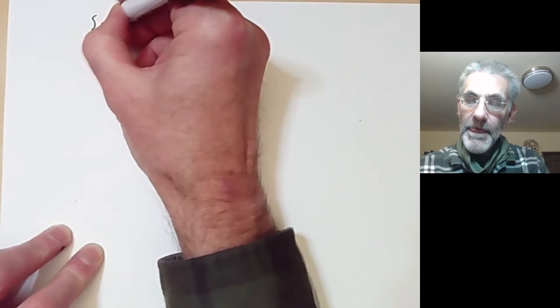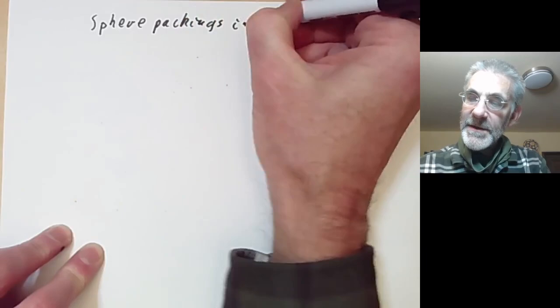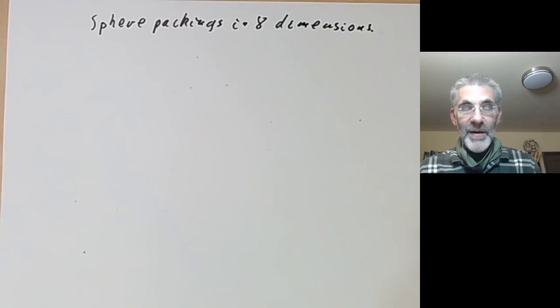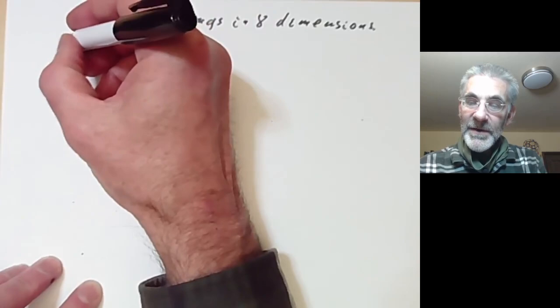This talk is about sphere packings in eight dimensions and the problem of what is the best sphere packing in eight dimensions. This problem was solved a few years ago by work of Henry Cohn, Noam Elkies, and Marina Viazovska, and what I'm going to do is describe their work.